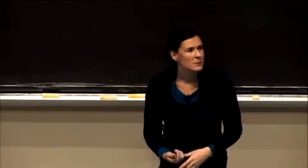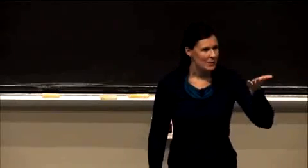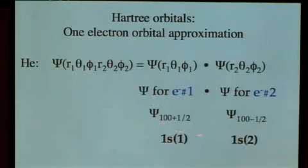We know how to write that in terms of the state numbers, so it would be one, zero, zero, because we're talking about the ground state. We're always talking about the ground state unless we specify that we're talking about an excited state. And we have the spin quantum number as plus one-half for electron one and minus one-half for electron two.